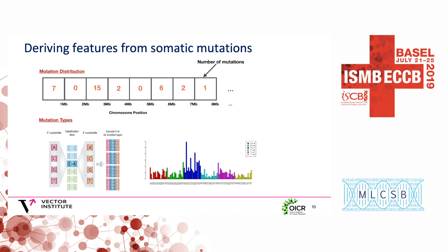I derived features from mutations in two different ways. The first is what I call the mutation distribution, corresponding to the mutation density features described earlier. To construct these features, we take the genome, fuse each chromosome head to tail, split the genome into one-megabase bins, and count the number of single nucleotide variants in each bin, throwing out all other mutation information. We also included information about mutational exposures in the form of mutation types — specifically, normalized counts of different trinucleotide contexts in which mutations occur.